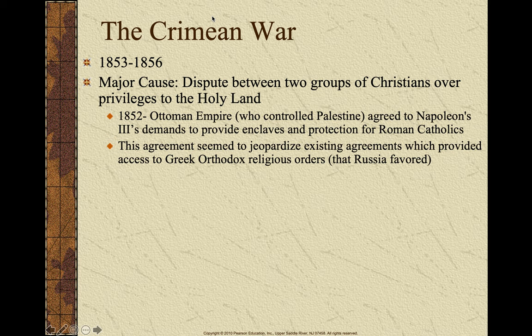In the 1850s, the Ottoman Empire, which controlled Palestine — the Holy Land — agreed to Napoleon III's demands to provide protection, benefits, and privileges for Roman Catholics in the Holy Land. Well, Russia did not like Napoleon III doing this. Russia did not like the Ottomans giving Catholics these benefits and privileges, because Russia felt this threatened an agreement they had with the Ottomans to provide the same thing for Greek Orthodox Christians. So Russia was very upset with this.